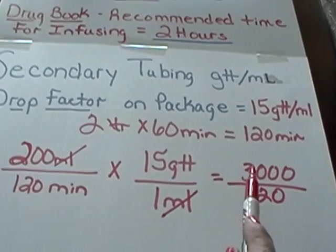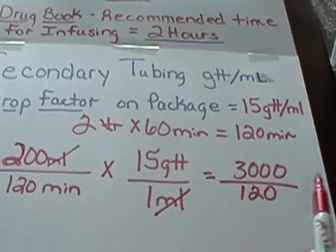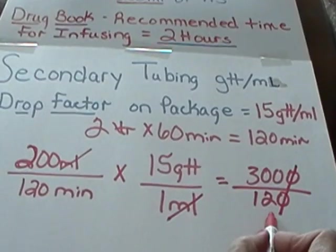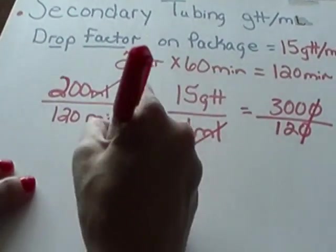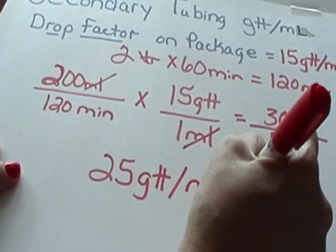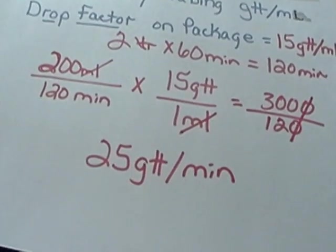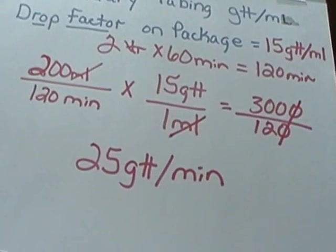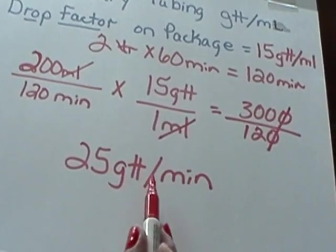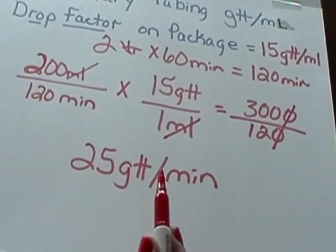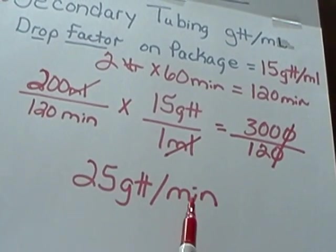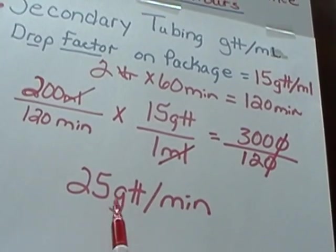We can use a calculator: 3000 divided by 120, or cancel a set of zeros and say 300 divided by 12. Our answer is 25 — that's 25 drops per minute. Remember, any time you're administering an IV at gravity and calculating drops per minute, you will need a second hand on your watch or a clock with a second hand in the patient's room to count 25 drops per minute.